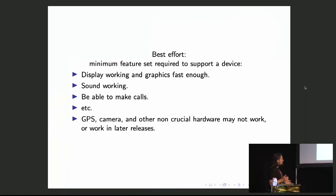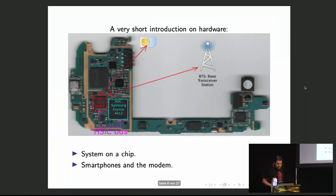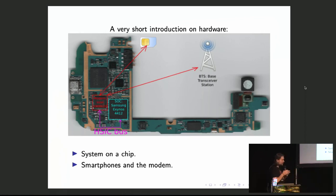The distribution is free — no binary blobs. To make that possible we compromise on features: for instance, GPS doesn't work on any of the devices we support. But we make sure the basic stuff works, like calls and sound.